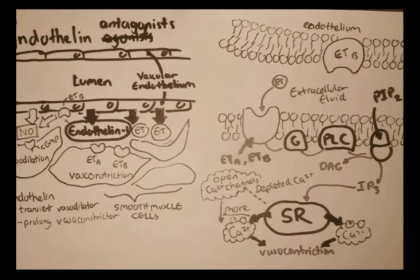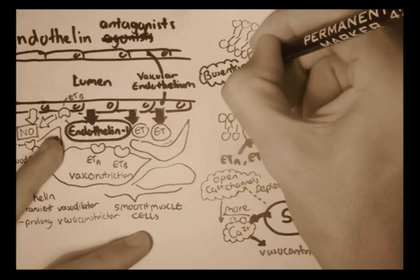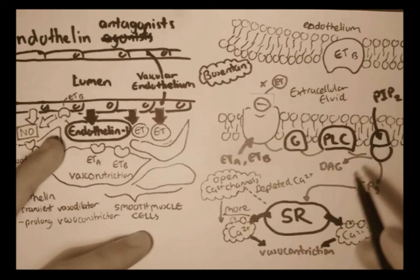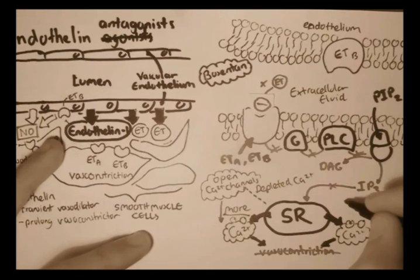So, an example of an endothelium antagonist is a drug called bosentan. So, what does it do, is that it basically blocks the receptor. It basically blocks the receptor, and when it blocks the receptor, it means that it blocks all the events, the G protein events, no inositol triphosphate, and no vasoconstriction. All which decreases blood pressure.